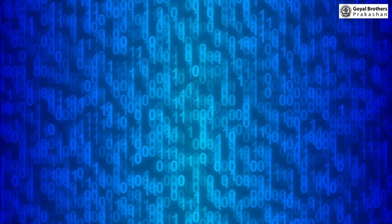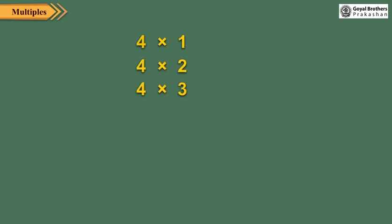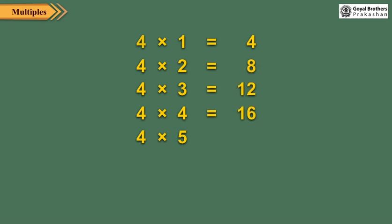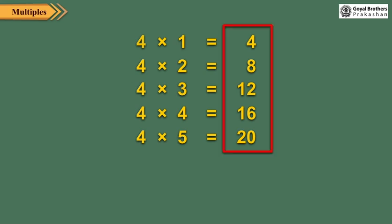Multiples. Observe the products. Here, 4 is multiplied by 1, 2, 3, 4, and 5 respectively to get the products as 4, 8, 12, 16, and 20 respectively. We call 4, 8, 12, 16, and 20 as multiples of 4.